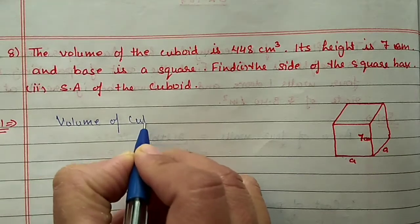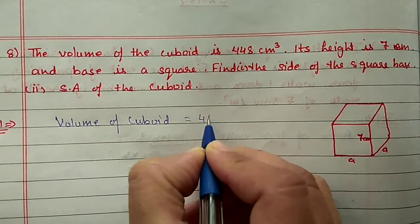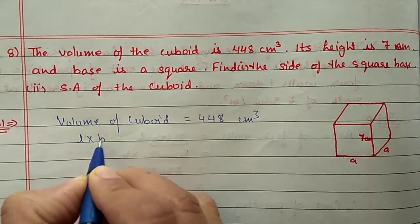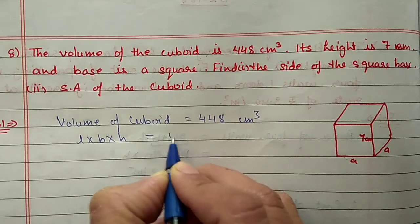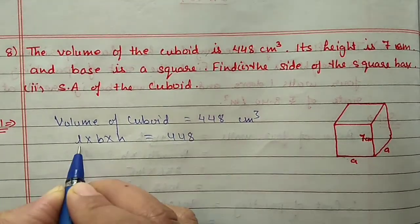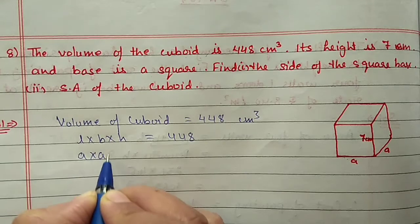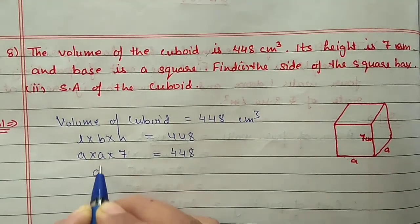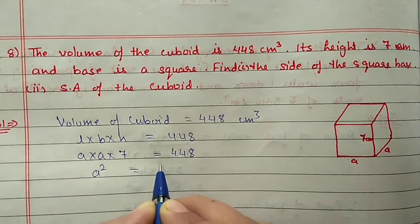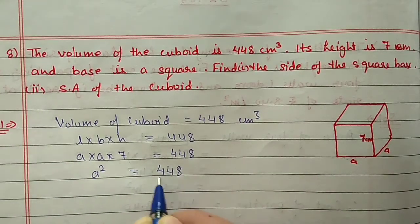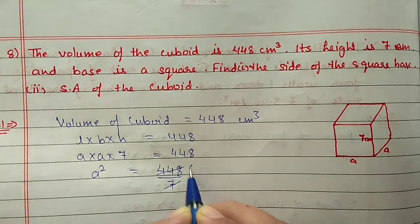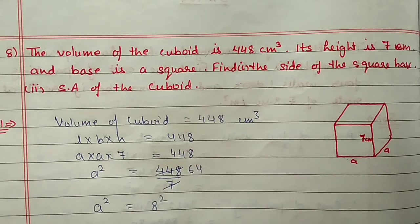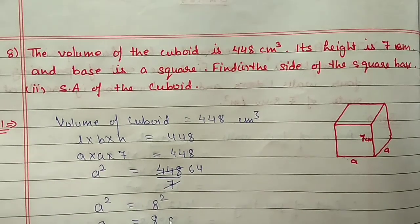Volume of the cuboid is given as 448 cm³. The formula is length into breadth into height equal to 448. Length and breadth are both a, and height is 7. So a² into 7 equals 448, giving a² = 64, which we write as 8². Therefore a is equal to 8 cm.